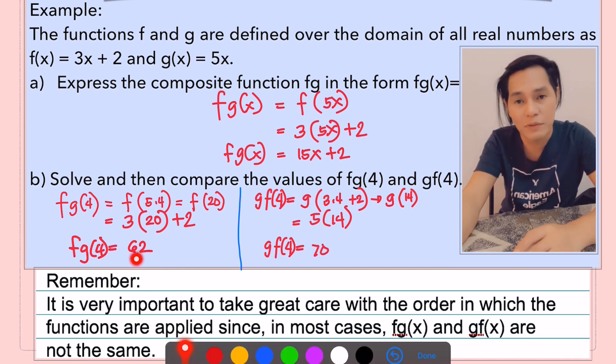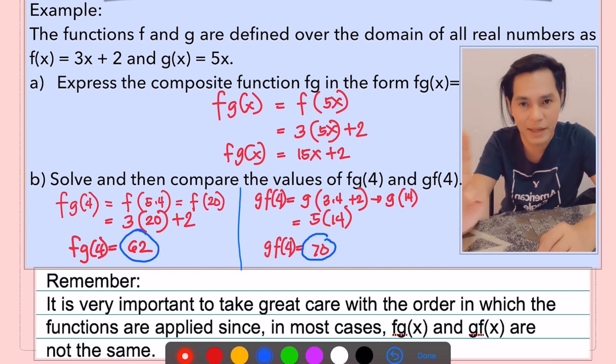Let's compare. Look at f of g of 4. That is 62. And g of f of 4 is equal to 70. So they are not the same. So be careful on that, okay?